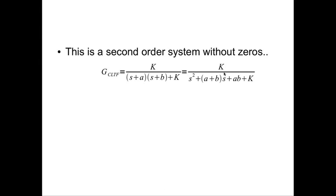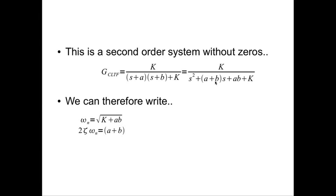Now, this closed loop transfer function is a second order system without zeros. So you can write expressions for omega n, which is this is omega n squared. So omega n is root of k plus ab. 2 zeta omega n is a plus b. So the rise time tr is 1.8 divided by omega n, which is 1.8 divided by root of k plus ab.